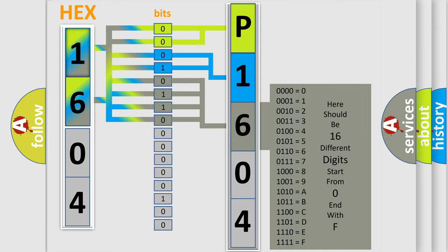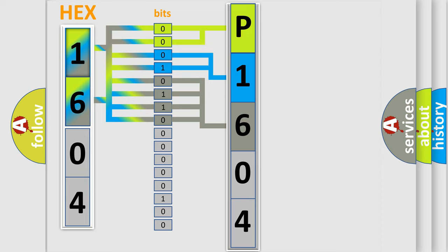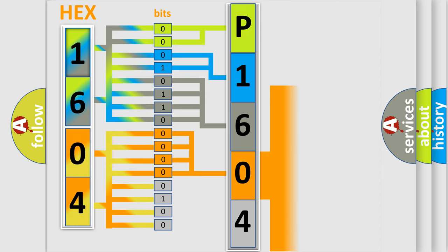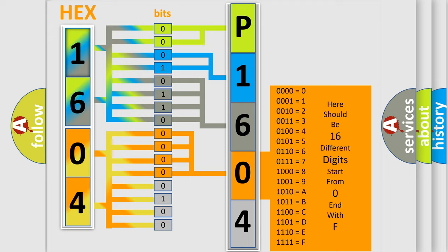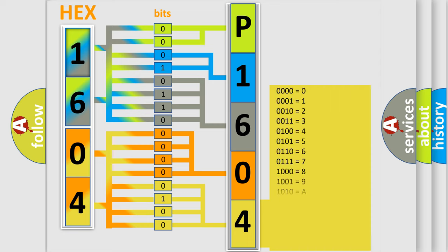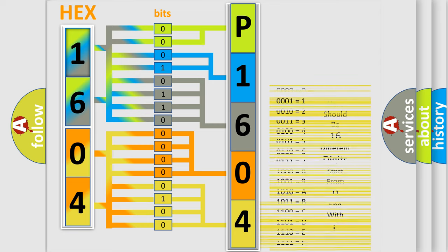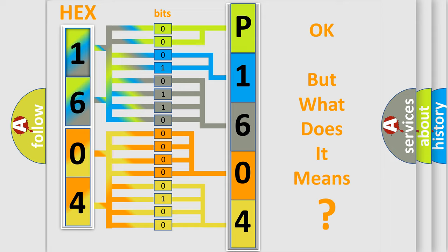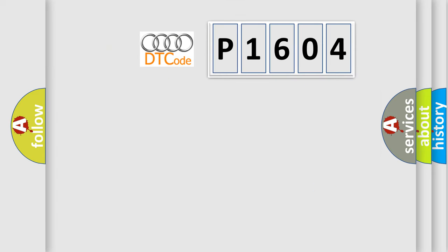The second byte is composed of a combination of eight bits. The first four bits determine the fourth character of the code, and the combination of the last four bits defines the fifth character. A single byte conceals 256 possible combinations. We now know in what way the diagnostic tool translates the received information into a more comprehensible format. So, what does the Diagnostic Trouble Code P1604 interpret specifically for Audi car manufacturers?